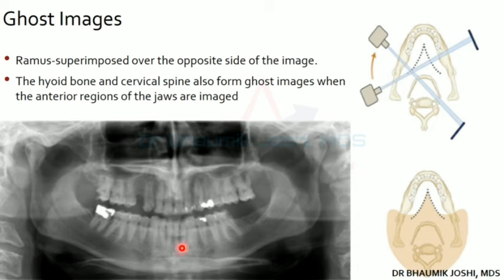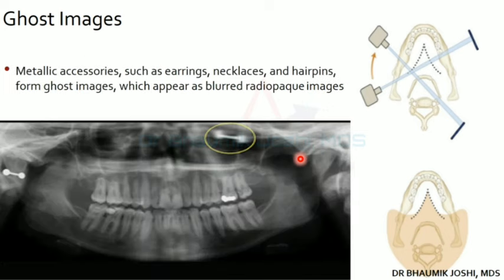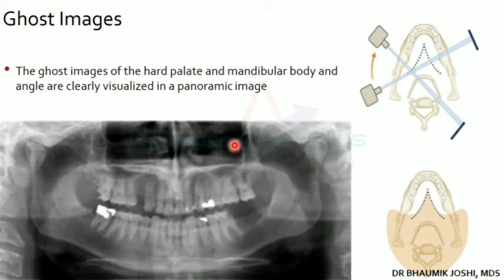The hyoid bone and cervical spine also form ghost images when the anterior region is being imaged. When x-rays pass through the anterior region, the hyoid bone and vertebrae lie between the center of rotation and the x-ray source, creating ghost images. Foreign bodies like metallic earrings also create ghost images — if a patient does not remove their earring, its ghost image appears on the opposite side at a higher level. The hard palate also forms a ghost image, and the mandibular body and angle are clearly visualized on a panoramic image.